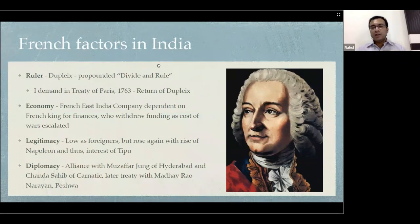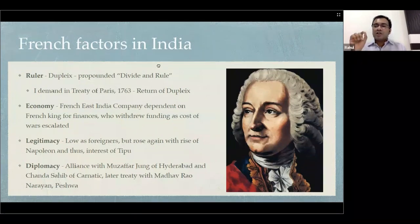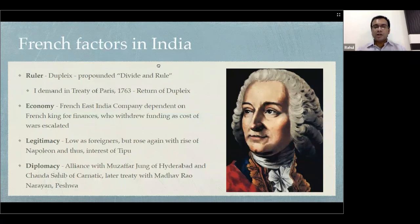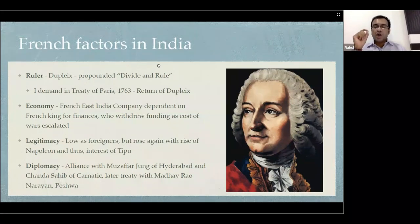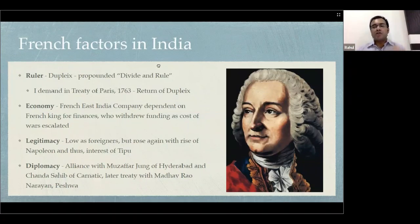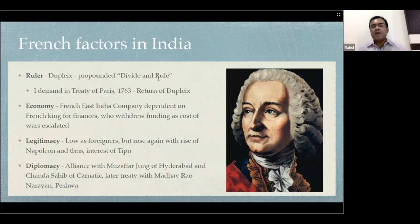We talked about four factors — ruler, economy, legitimacy, and diplomacy. Let's apply those factors to the French struggle in India. First, they had an exemplary commander: Dupleix. It was Dupleix who propounded the theory of divide and rule. In fact, when the Treaty of Paris was signed, the first demand the English made to the French was to take back this person — because a good commander can transform the fortunes of an empire. Dupleix was the brainchild behind divide and rule and the subsidiary alliance.